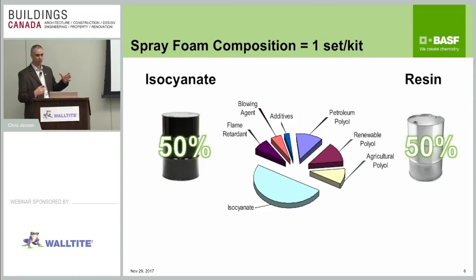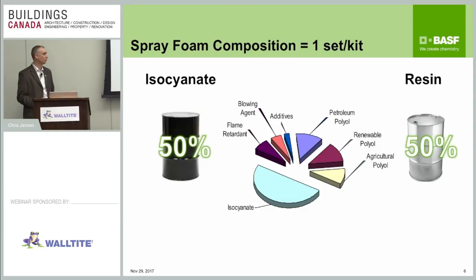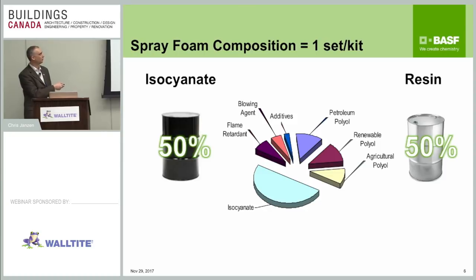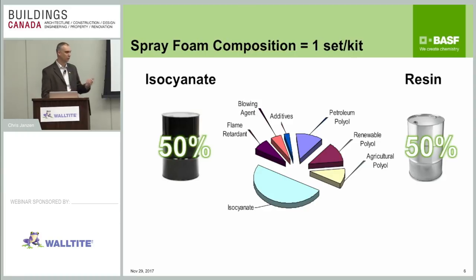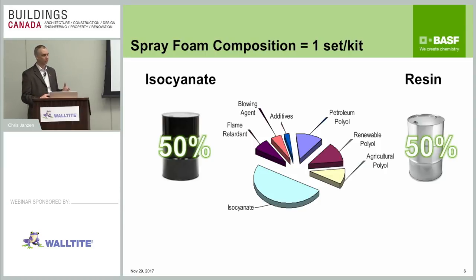On the component side, the finished foam consists of about 50% isocyanate, a petrochemical base coming out of the Gulf Coast area — there are four manufacturers of isocyanate in North America and BASF is one of them. The other half is the resin, where a lot of the specialty formulation happens — making it open cell or closed cell, higher or lower density. The resin includes flame retardants to meet building code flame spread requirements, blowing agents to make the foam rise and give it thermal insulation properties, and additives. There are also different polyols: oil-based, renewable with some recycled content, and agricultural-based from sugar sources. While there's a lot of talk about renewable content, these polyols still have petrochemical bases — it is an oil-based product, but it's a great use of oil since you're making fantastic insulation rather than burning it in your car.